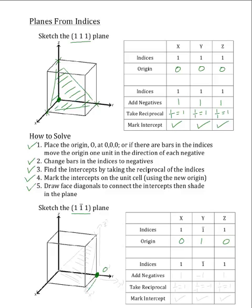Now we are going to call this new origin O', and to go along with this new origin, there will be a new x'-axis, a new y'-axis, and a new z'-axis. Now the next step is to change any bars in the indices to negatives. So 1 will remain as 1 because it does not have a bar, bar 1 will become negative 1, and 1 will also remain as 1.